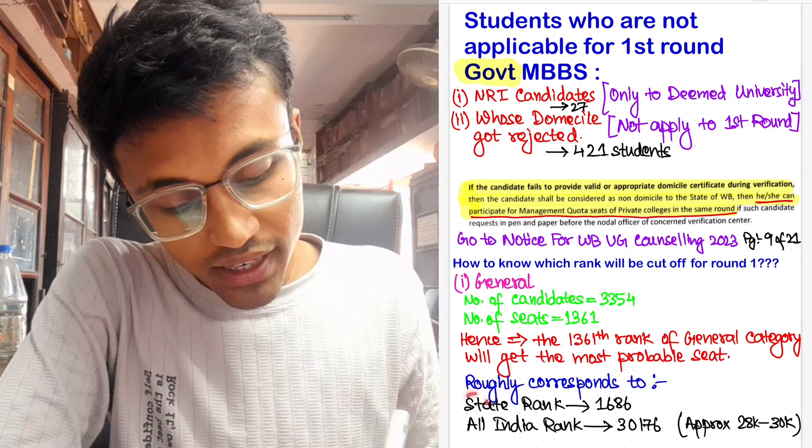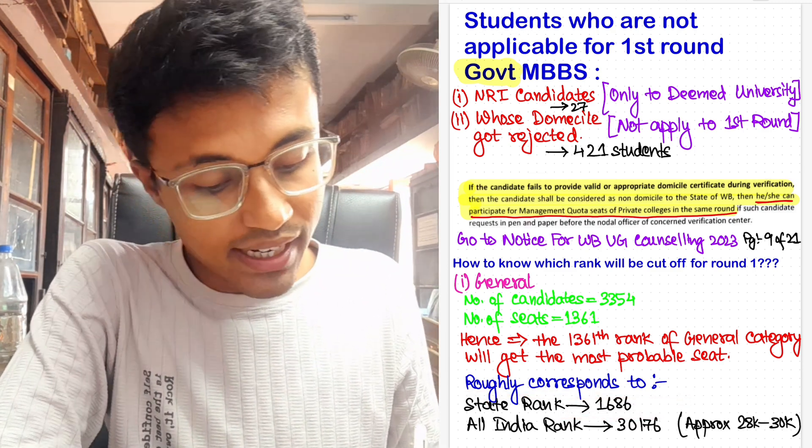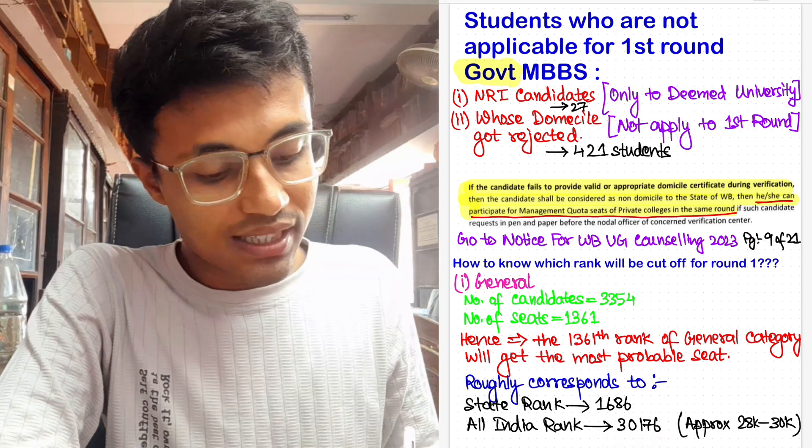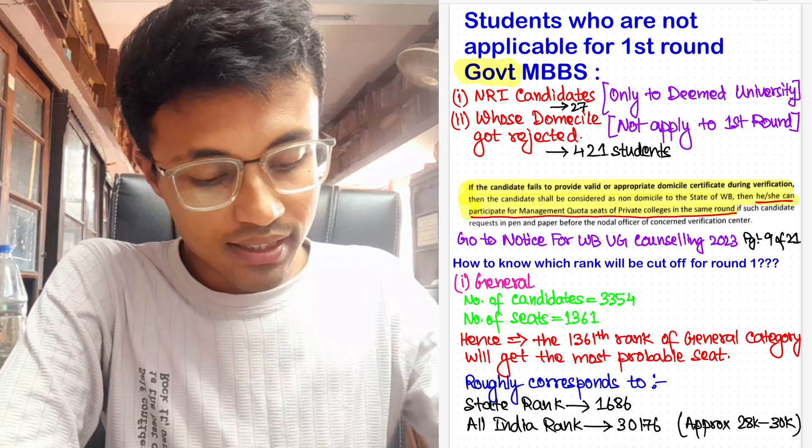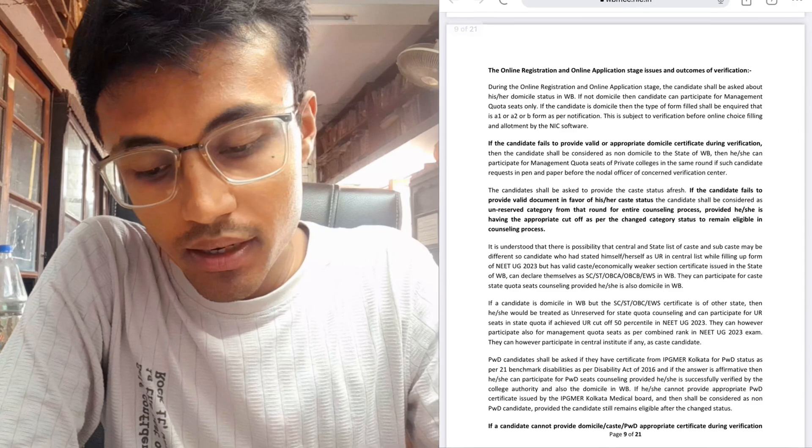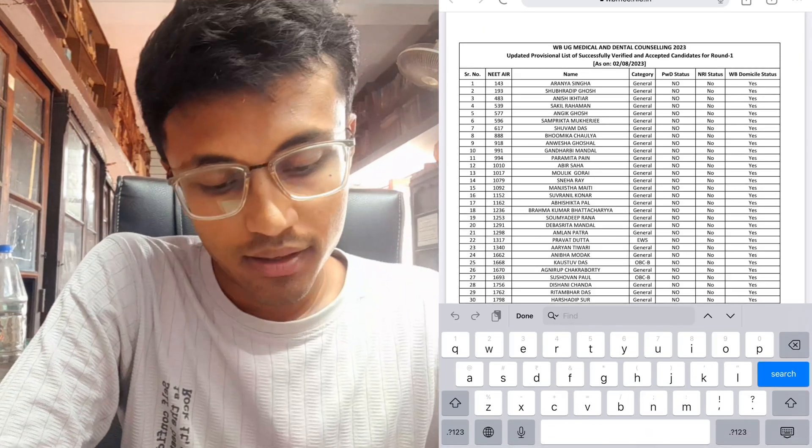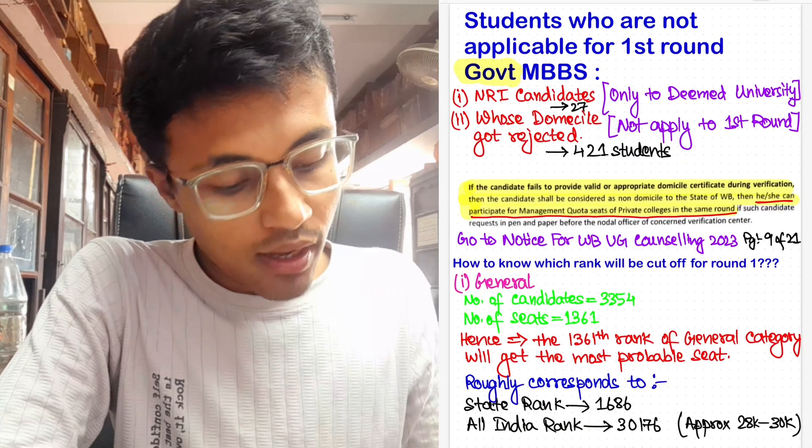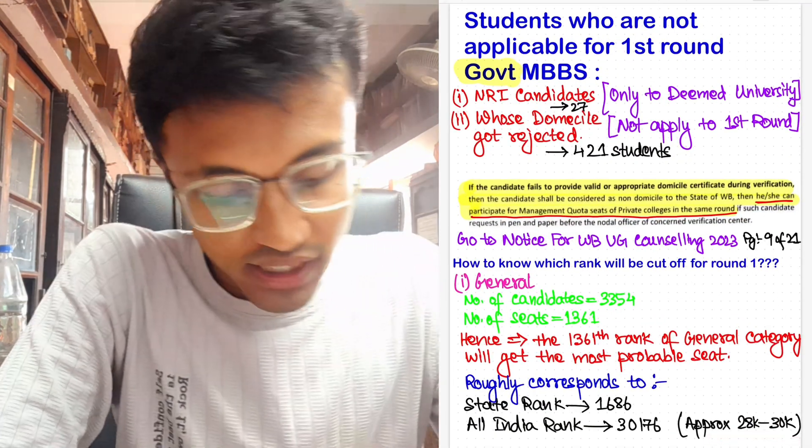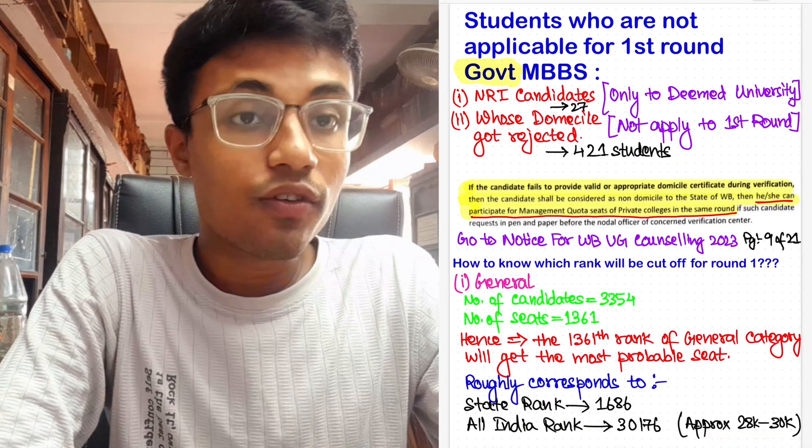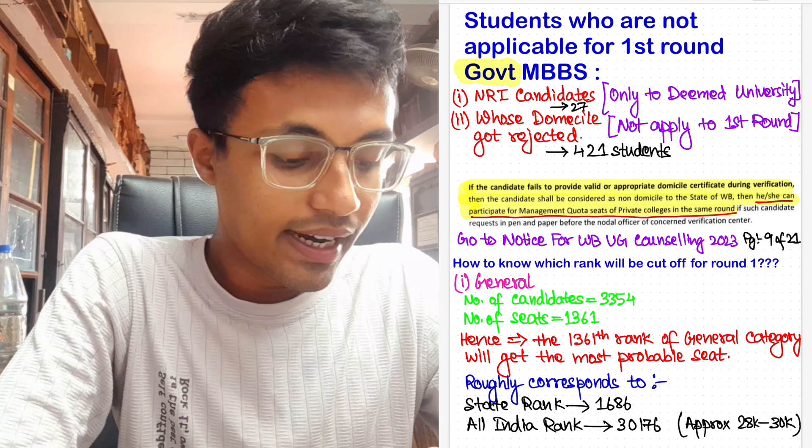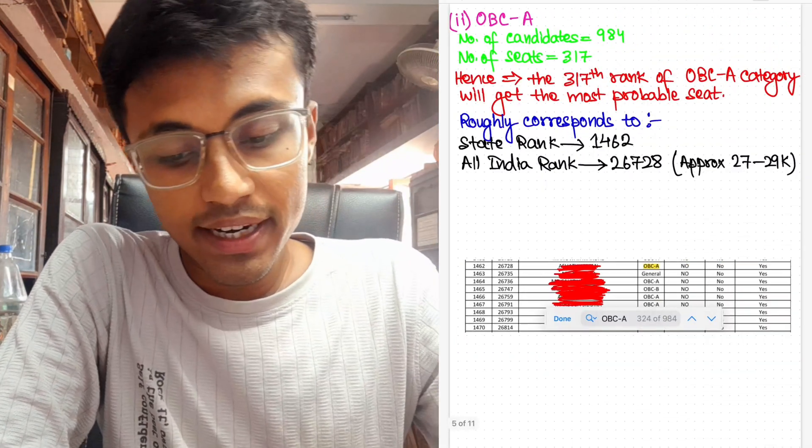So that roughly corresponds to state rank 1,686 and All India rank 30,176. This is according to this table, the provisional list provided to us by the West Bengal consulate. So my estimation is for the general category, the cutoff rank for first round counseling would be around 28,000 to 30,000 All India rank.